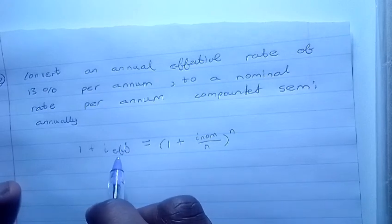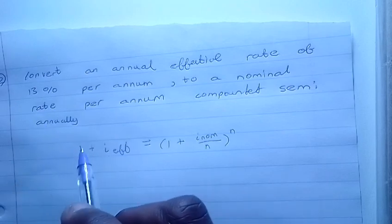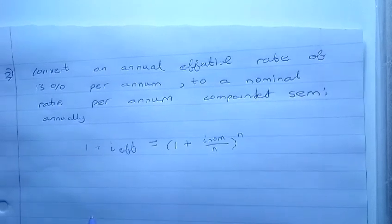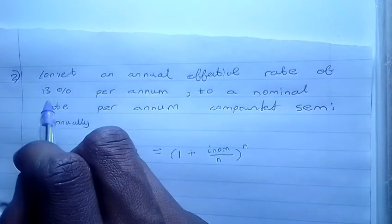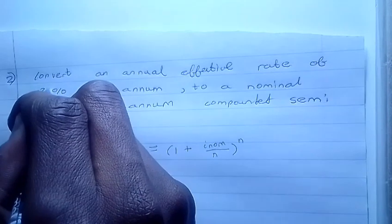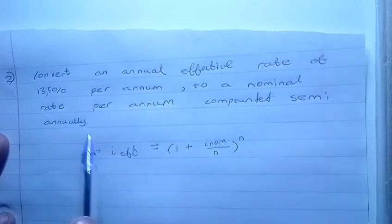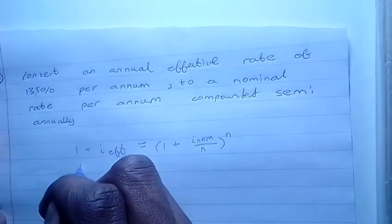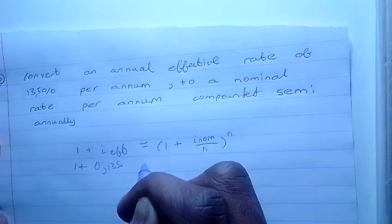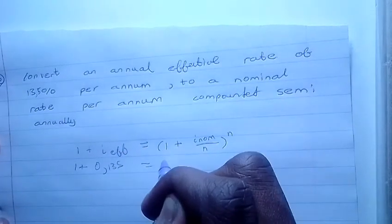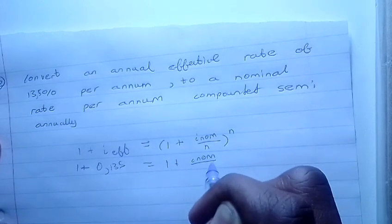From there, this effective interest is 13.5%, so we're gonna divide this by 100. It's gonna give us 1.135 equals 1 plus interest the nominal which we are trying to find.